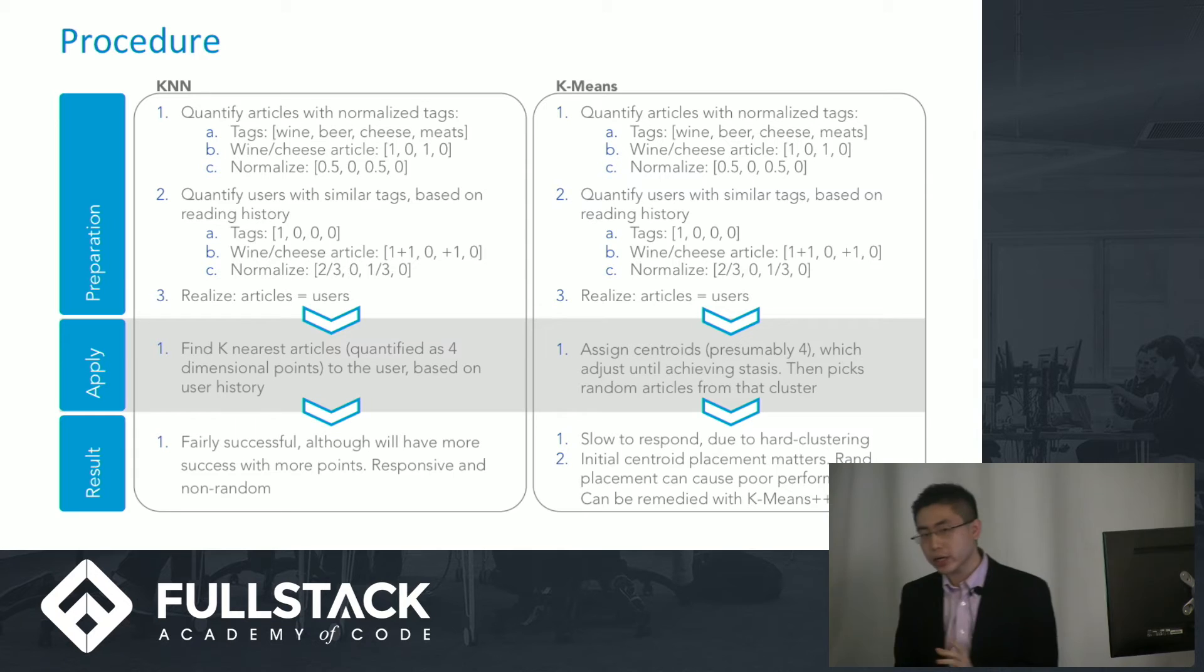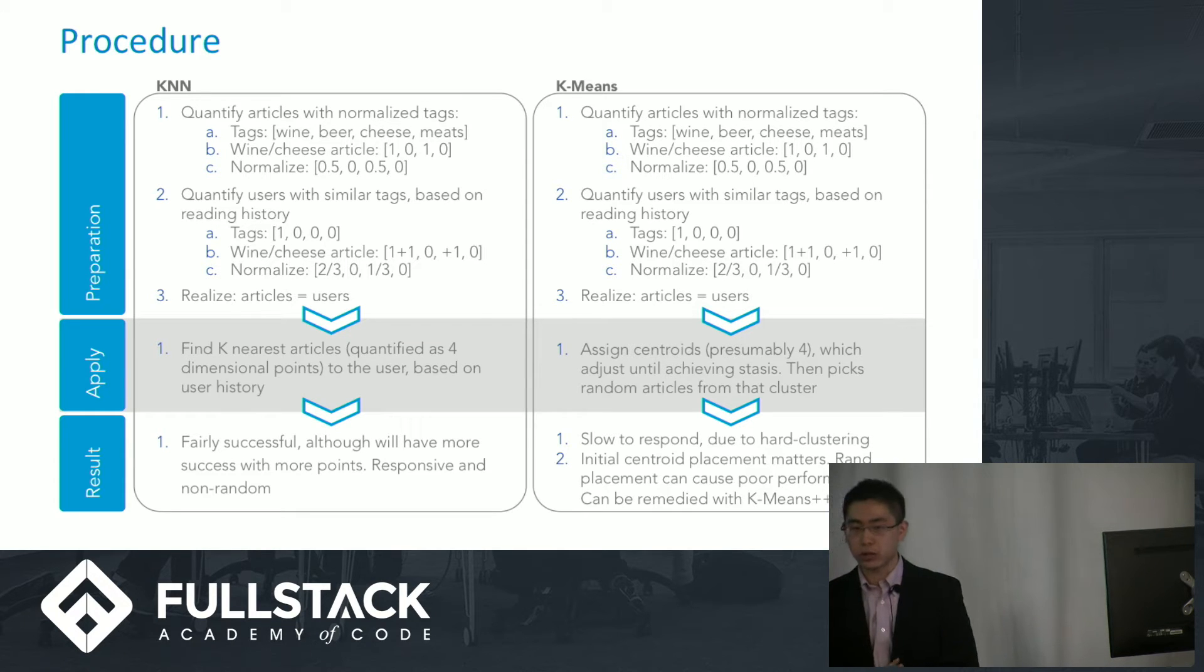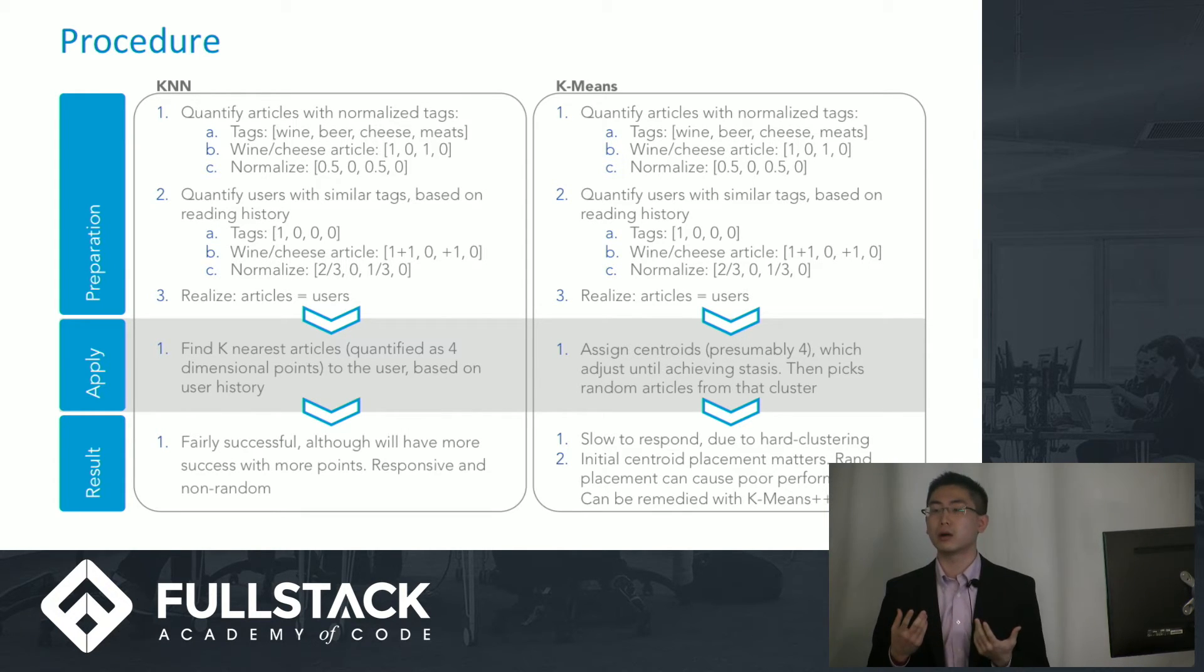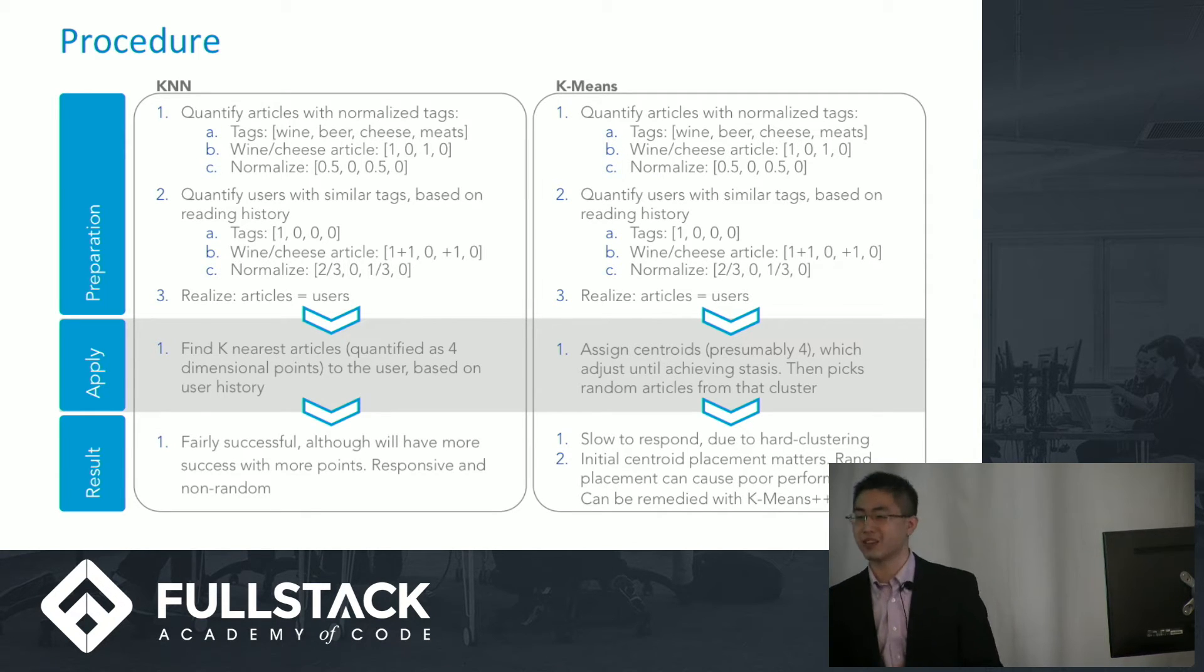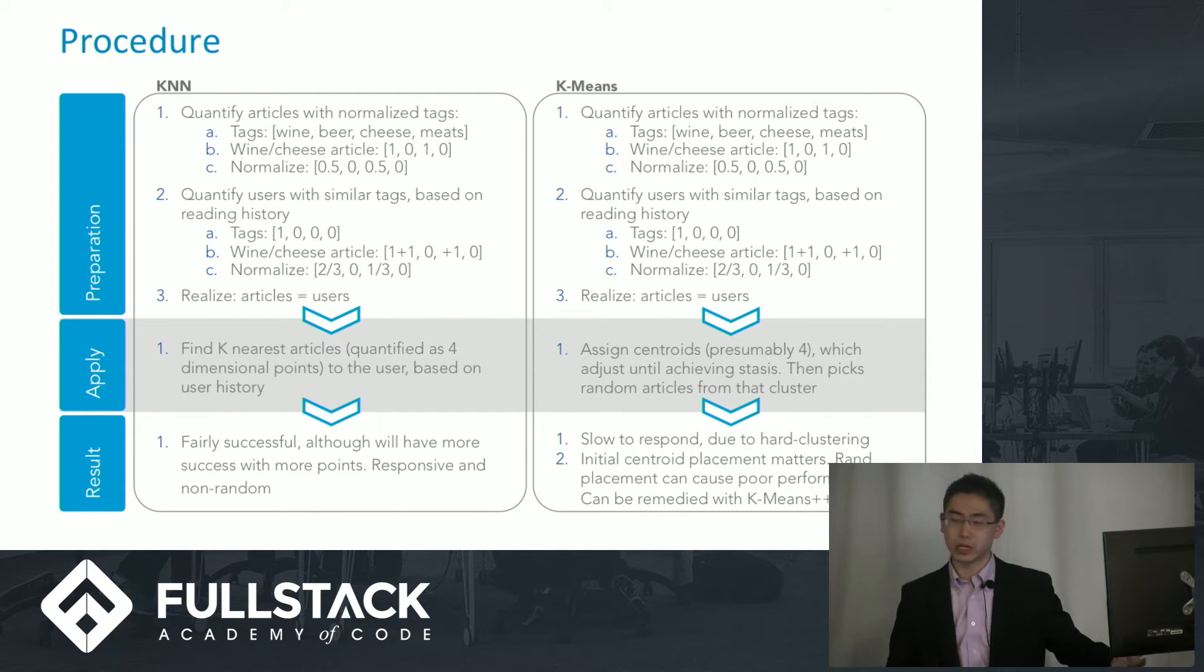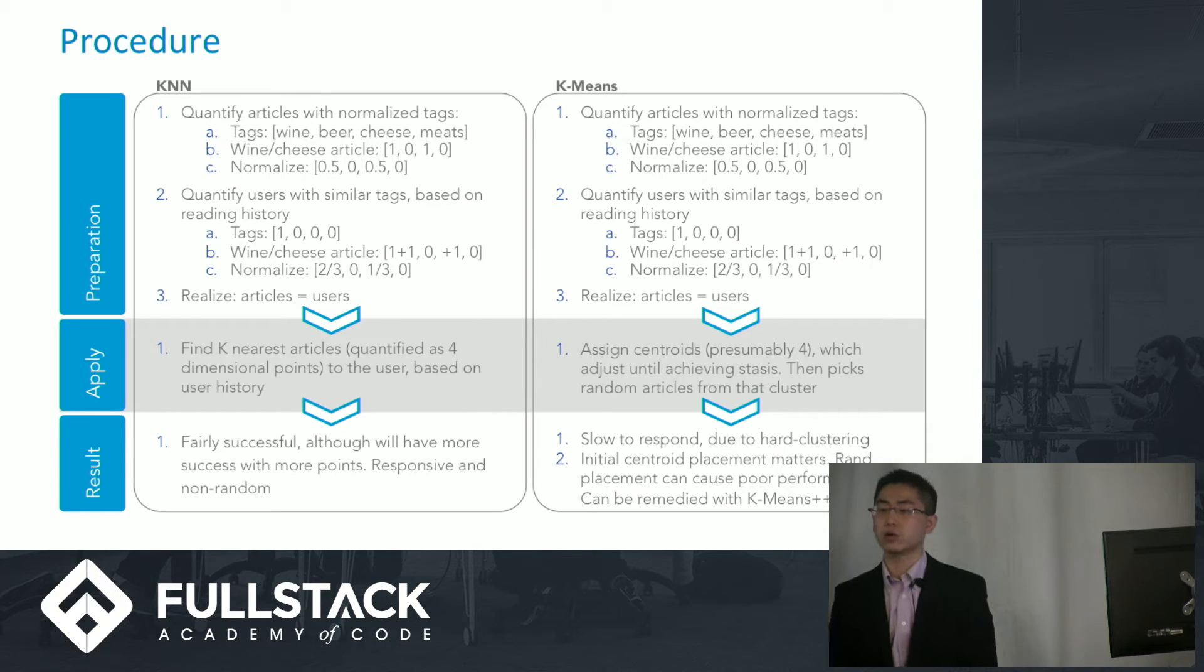So basically, I just divide by the total number of tags for each tag within. Now, the trick to this particular process was understanding that you can compare articles to users. Users are very similar to articles, right?